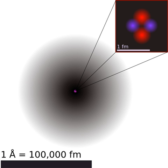Covalent radius — the nominal radius of the atoms of an element when covalently bound to other atoms, as deduced from the separation between the atomic nuclei in molecules. In principle, the distance between two atoms that are bound to each other in a molecule should equal the sum of their covalent radii. Metallic radius — the nominal radius of atoms of an element when joined to other atoms by metallic bonds. Bohr radius — the radius of the lowest energy electron orbit predicted by the Bohr model of the atom; it is only applicable to atoms and ions with a single electron, such as hydrogen, singly ionized helium, and positronium.